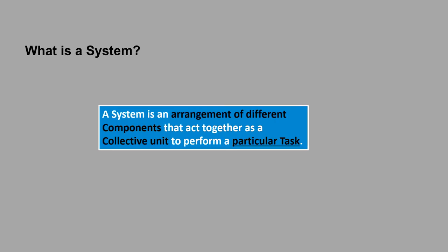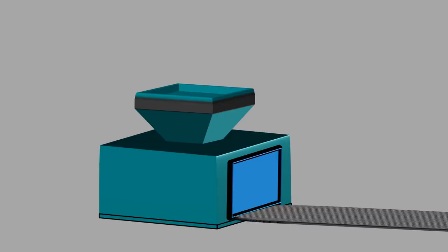First, let's discuss what is a system. A system is an arrangement of different components that act together as a collective unit to perform a particular task. A system consists of three basic elements, namely input, process, and output.